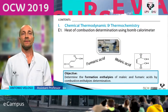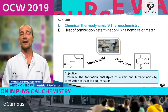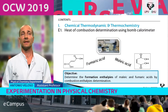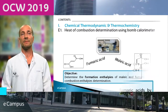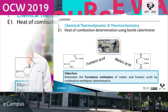The first lesson is about chemical thermodynamics and thermochemistry. The first experiment is entitled Heat of Combustion Determination Using a Bomb Calorimeter. The main objective of this experiment is to determine the formation enthalpies of maleic and fumaric acids by combustion enthalpy determination.